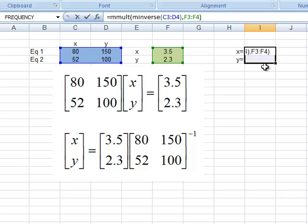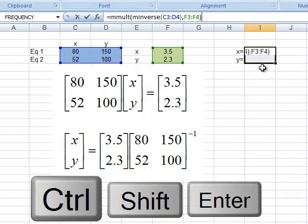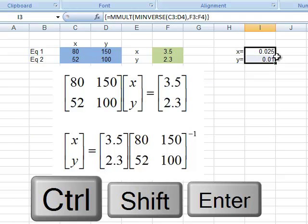And then I don't press return, because I want to solve both of these at the same time. So I press control shift return, and it gives me my two values.